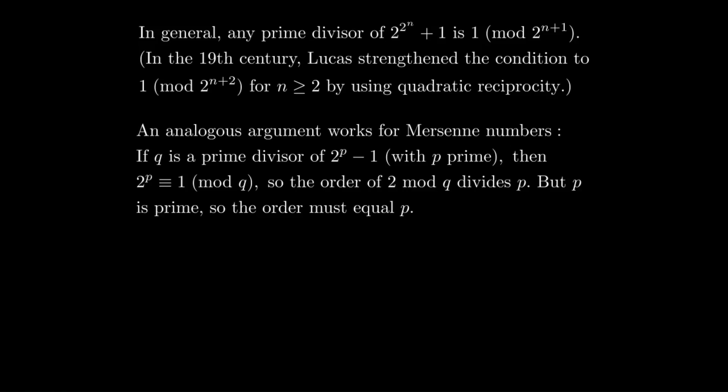So we can say that q is 1 mod p using the result we just proved. And we can strengthen that a little bit by saying that q is 1 mod 2p because q is always odd. And p is odd, so we might as well combine 1 mod p and 1 mod 2 into 1 mod 2p.